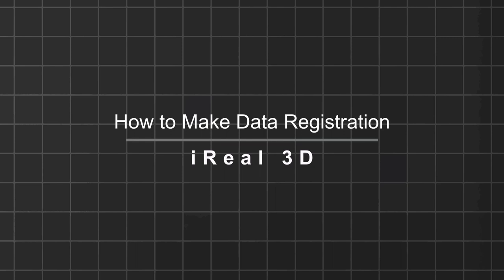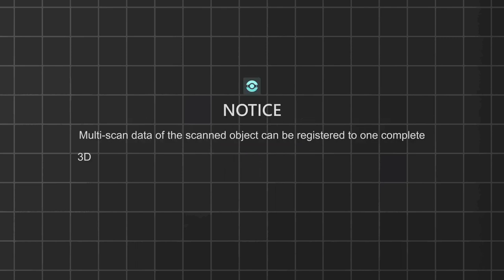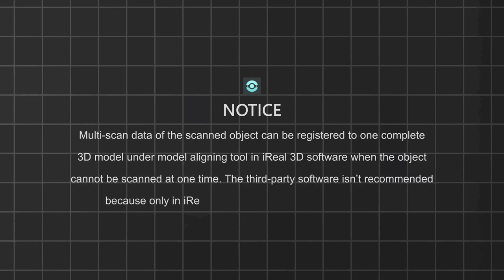How to make data registration. Multi-scan data of the scanned object can be registered into one complete 3D model under the model aligning tool in IRL 3D software, when the object cannot be scanned at one time. Third-party software is not recommended because only in IRL 3D can the texture be aligned normally.